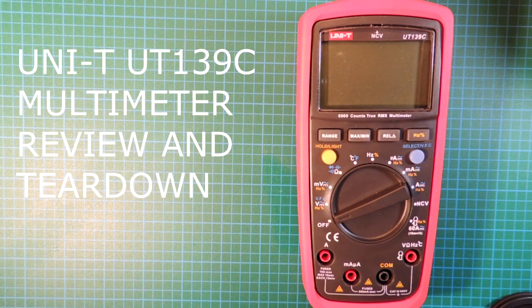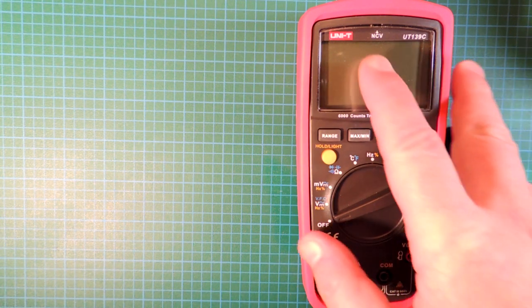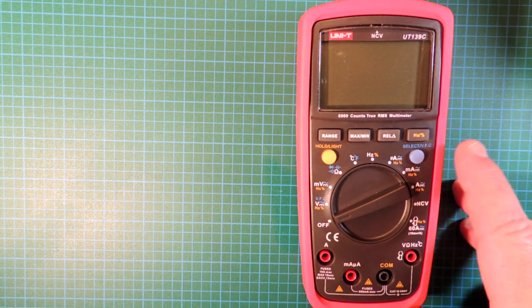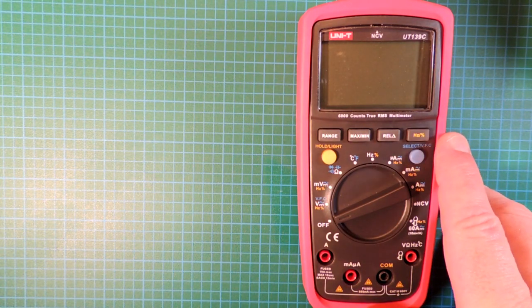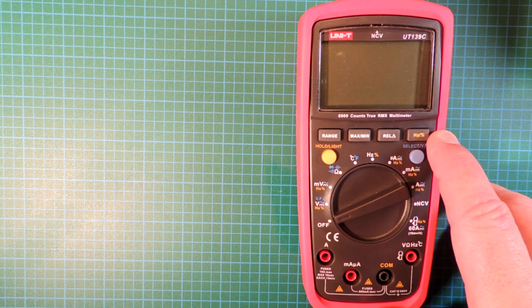Review and teardown time of the UT139C multimeter you can get off of eBay. Uni-T produces a number of meters which have a fairly decent feature set and pretty decent accuracy for the price. I bought this one off eBay for $49.99.